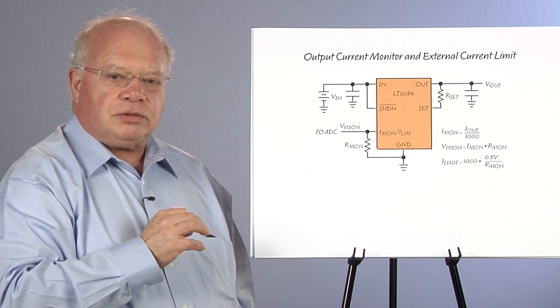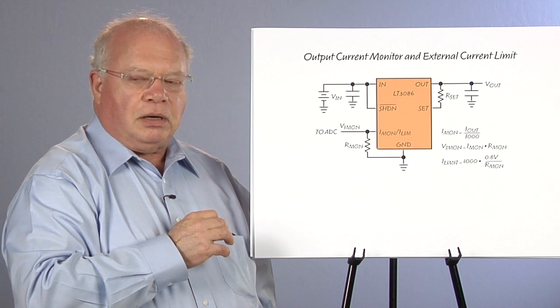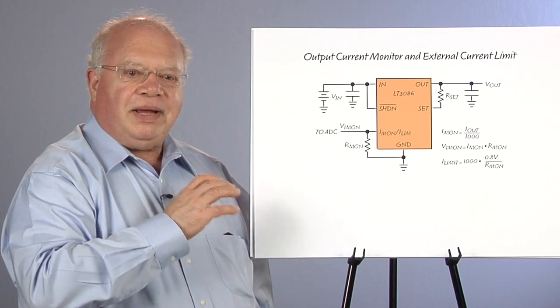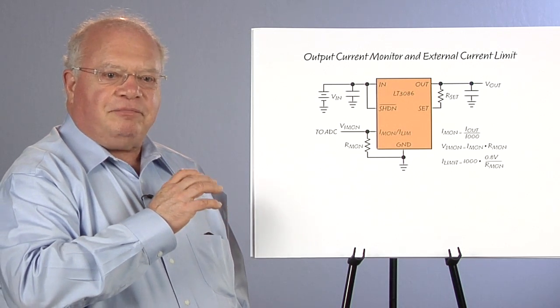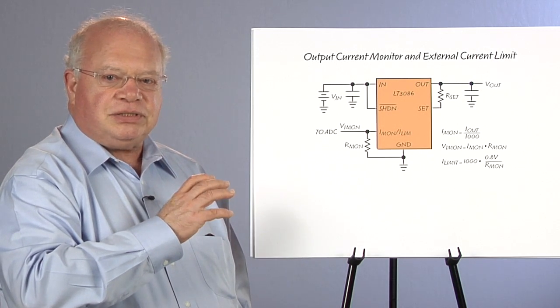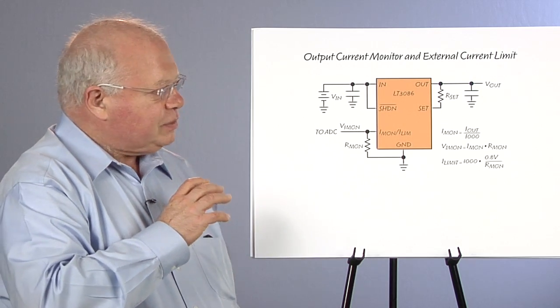By using a current source as our reference, we get constant loop gain independent of output voltage, so we have better regulation at high voltages and better transient response.